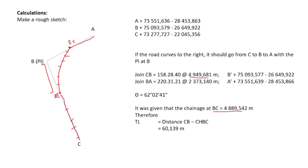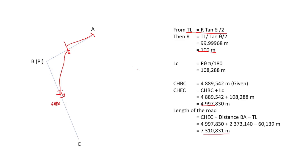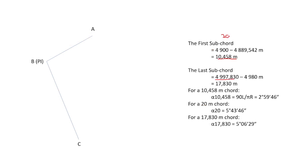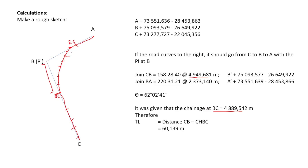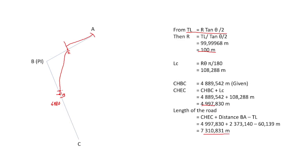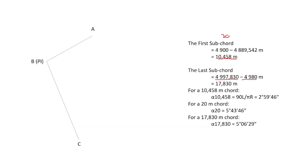The last chord follows the same logic: the 20-meter chainage marks step along, and EC falls in between. The last chord is the chainage of EC minus the previous 20-meter mark, giving that final partial section. So we have the first chord, the last chord, and all middle chords which are full 20-meter sections.